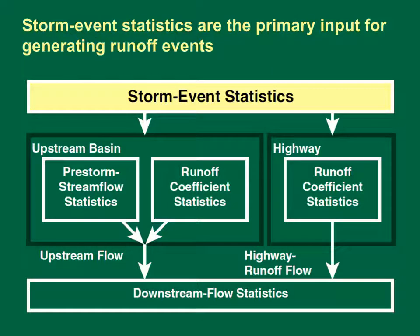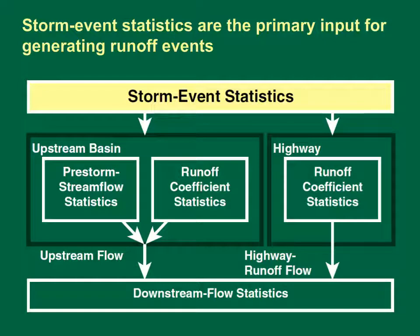As this diagram indicates, storm event precipitation statistics are the primary input for generating runoff events in SELDM. Monte Carlo methods are used to generate a population of storms. The precipitation volumes are applied to the area of the upstream basin and the area of the highway, and runoff coefficients are used to transform rainfall into runoff volumes from each area. The duration of the storm event is used to help determine the timing and duration of runoff flows. The time between storm event midpoints is used to calculate the number of storms per year and ultimately the total number of events in a simulation.